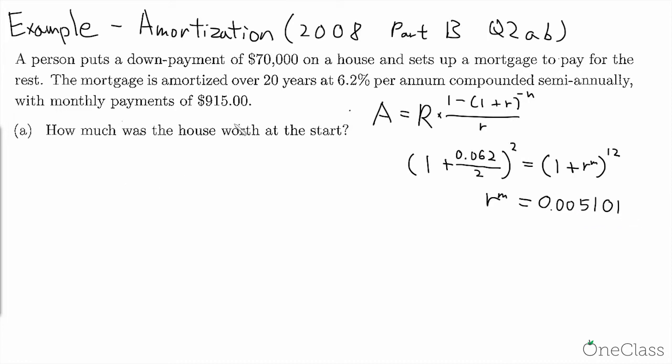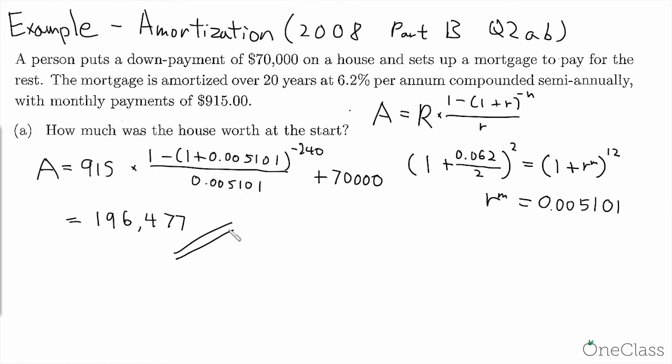So now let's begin the question. Here we have A, which is the present value or how much the house is worth at the start. So A equals R is our payment. Payment is given and says it's 915, times [1 - (1 + R)^-N], which R is found to be 0.005101. So what is N here? It's amortized over 20 years and it's monthly payments, so how many payments are there in total? There are 240, over 0.005101. Here it seems like we're done but we're not done, because there is a down payment of 70,000 at the very beginning. And since we're finding present value we do not have to accumulate it or move it backwards, so it's just plus 70,000. And as a result this will give us $196,477.